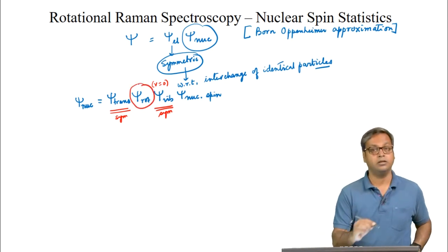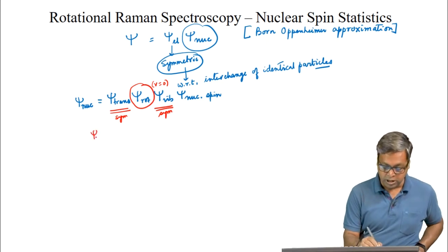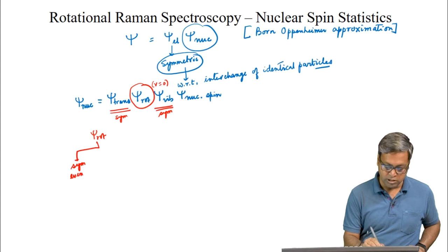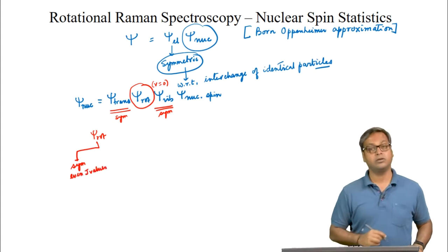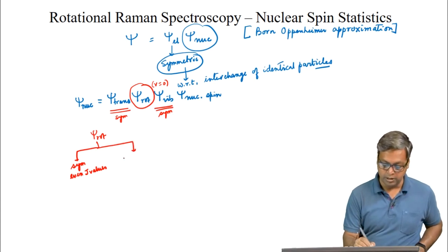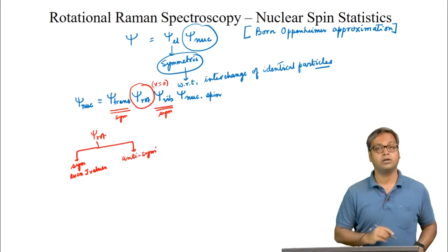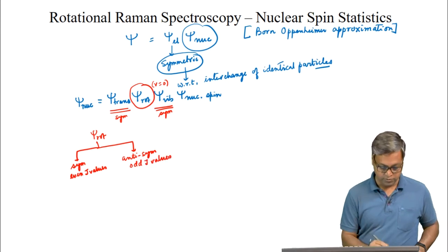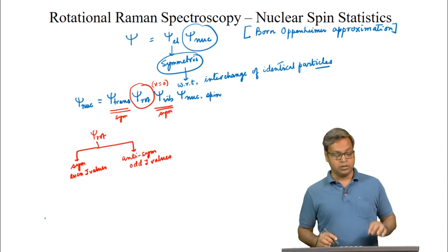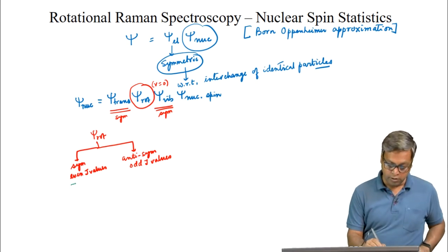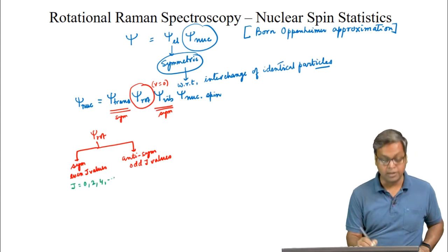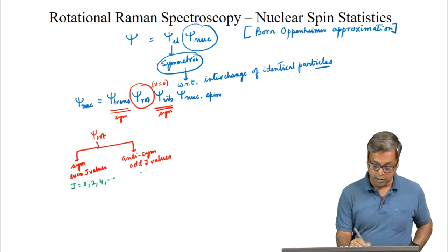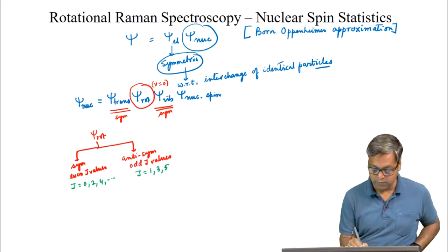However, ψ_rotational will be symmetric for even J values — that is, J = 0, 2, 4, etc. On the other hand, ψ_rotational is anti-symmetric for odd J values — J = 1, 3, 5, etc.